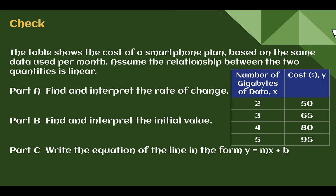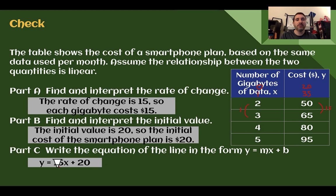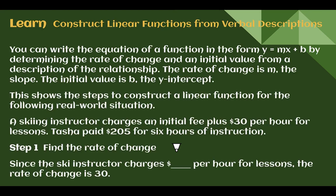Check your understanding — read through the situation and use the table to answer each part. Pause the video now and complete the check. Check your answers: in part A, the rate of change is 15 — it goes up $15 for one more gigabyte of data. For the initial value, working backwards: two is close to zero, so if two was 50 and it's going up 15 each time, then one must be 15 less, and zero must be 15 less again — so 20. The equation is y equals 15x plus 20. Pause the video and write down your thoughts on any errors made.